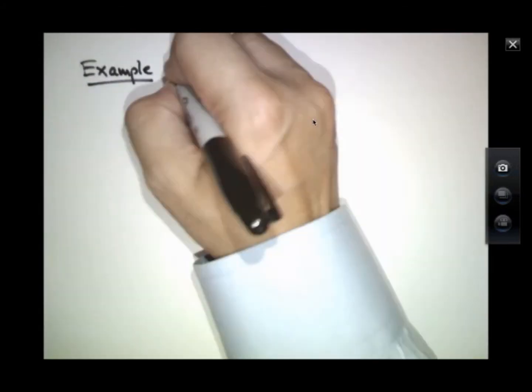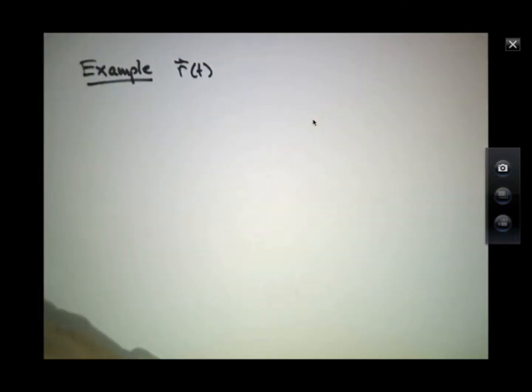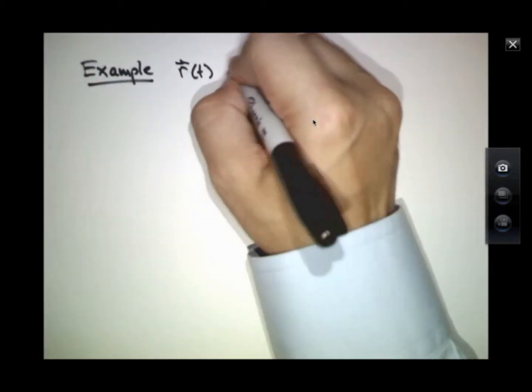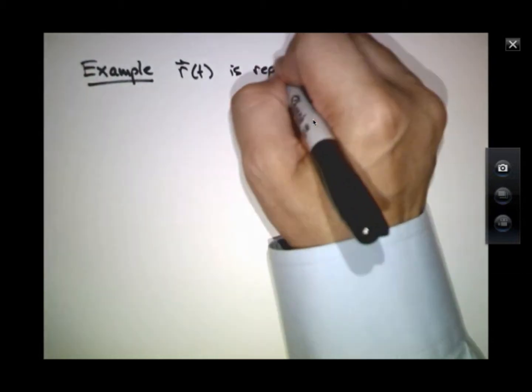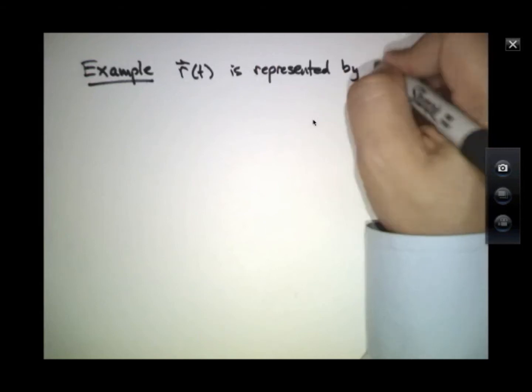So as an example, imagine that R of t, the position vector, is represented by the functions